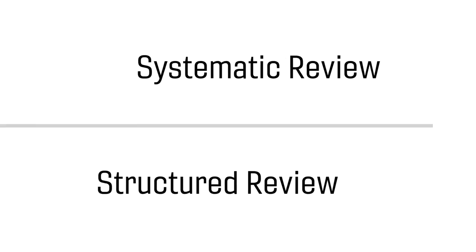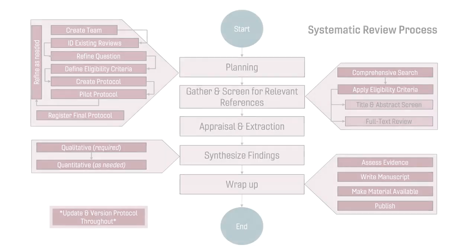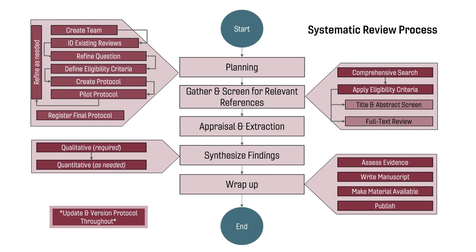It's easy to confuse the concept of a structured review with a systematic review, as the terms are so similar. However, the term 'systematic review' refers to a very specific procedure that requires authors to adhere to published protocols and reporting guidelines. The systematic review approach aims to answer a specific question or set of questions by collecting, evaluating, and synthesizing all available relevant information.